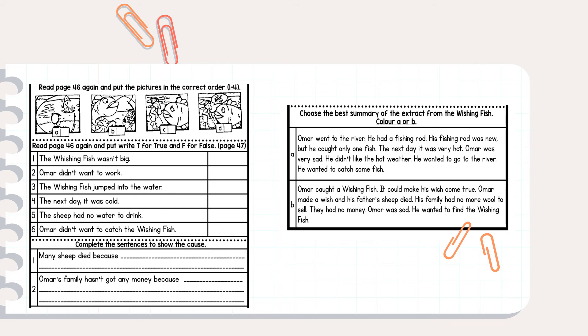And then, you have to identify true or false. You have to read the statement and write T for true and F for false. Okay, down here you have to complete the sentences to show the cost — the cost, maksudnya, sebab apa. Okay, next, on your right hand side, choose the best summary of the extract from the Wishing Fish. You have to identify which is the best summary — summary itu maksudnya rumusan, ataupun ringkasan terhadap cerita yang panjang tadi.